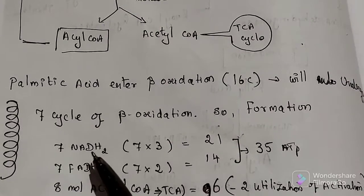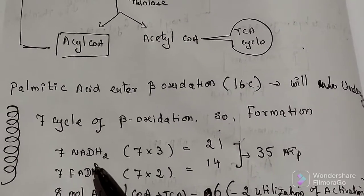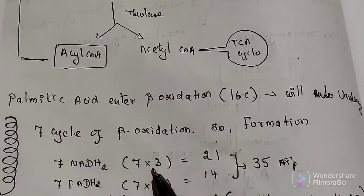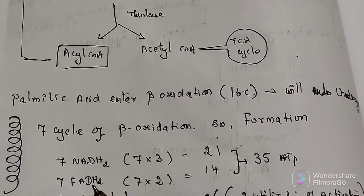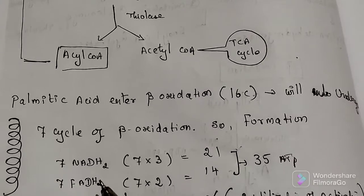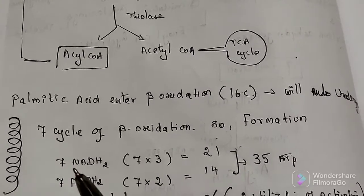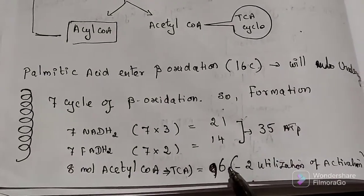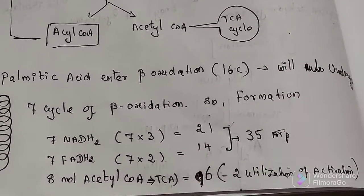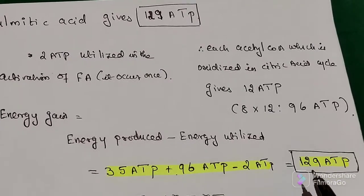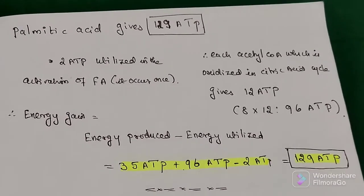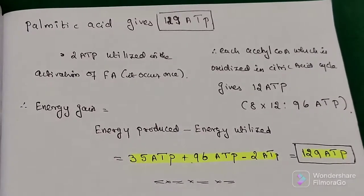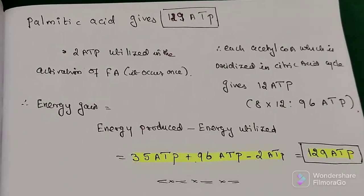For the energy calculation: 7 NADH2 × 3 ATP = 21 ATP; 7 FADH2 × 2 ATP = 14 ATP; 8 acetyl-CoA × 12 ATP = 96 ATP. Subtracting 2 ATP used for activation, palmitic acid gives a net total of 129 ATP molecules. This represents the energy gain from beta oxidation of palmitic acid.